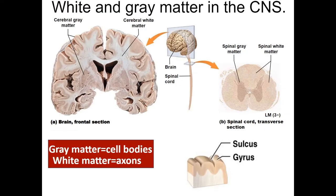Our brain is not made up of the same components throughout. In a frontal section, we see gray matter along the periphery and white matter deep within. Gray matter is primarily neuronal cell bodies; white matter is myelinated axons connecting different regions. In the spinal cord, this arrangement is flipped — gray matter is in the deepest part and white matter is along the periphery.